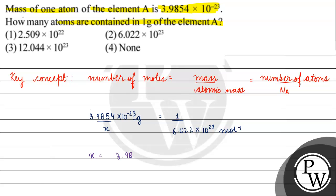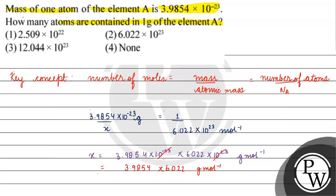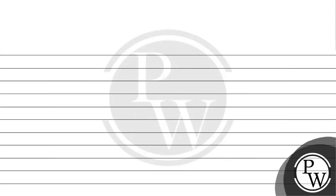x equals 3.9854 × 10⁻²³ multiplied by 6.022 × 10²³ grams per mole. The 10⁻²³ and 10²³ cancel out, giving us x = 3.9854 × 6.022 grams per mole, which comes out to approximately 24 grams per mole. So we have our atomic mass.